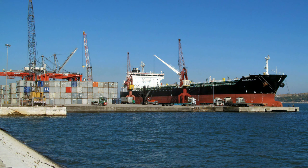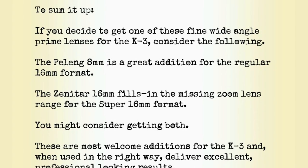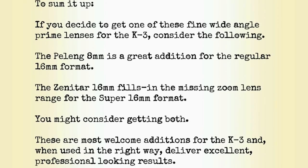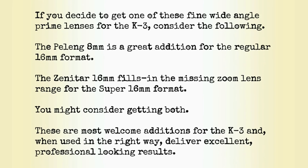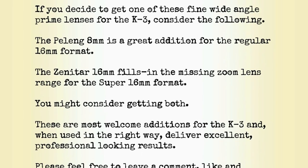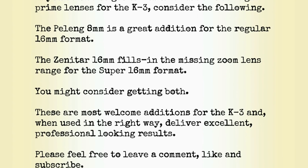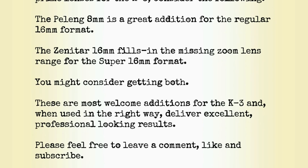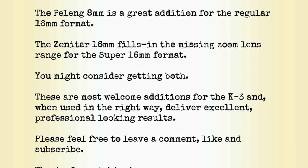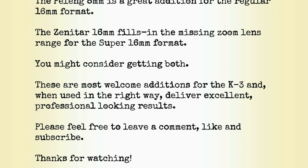To sum it up: if you decide to get one of these fine wide-angle prime lenses for the K3, consider the following. The Peleng 8mm is a great addition for the regular 16mm format. The Zenitar 16mm fills in the missing zoom lens range for the super 16mm format. You might consider getting both — these are most welcome additions for the K3 and, when used in the right way, deliver excellent professional-looking results. Please feel free to leave a comment, like and subscribe. Thanks for watching.